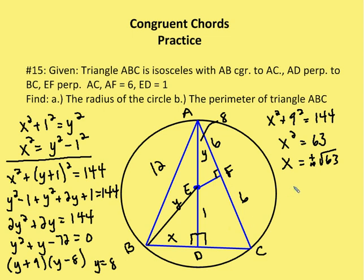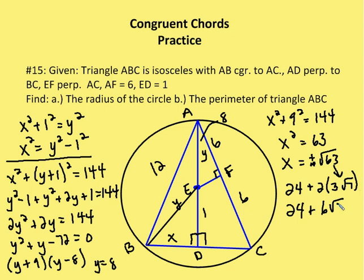The perimeter is 12 + 12 + 2√63, which is 24 + 2√63. Since 63 = 9 × 7, √63 = 3√7. So 2√63 = 6√7, and the perimeter equals 24 + 6√7.